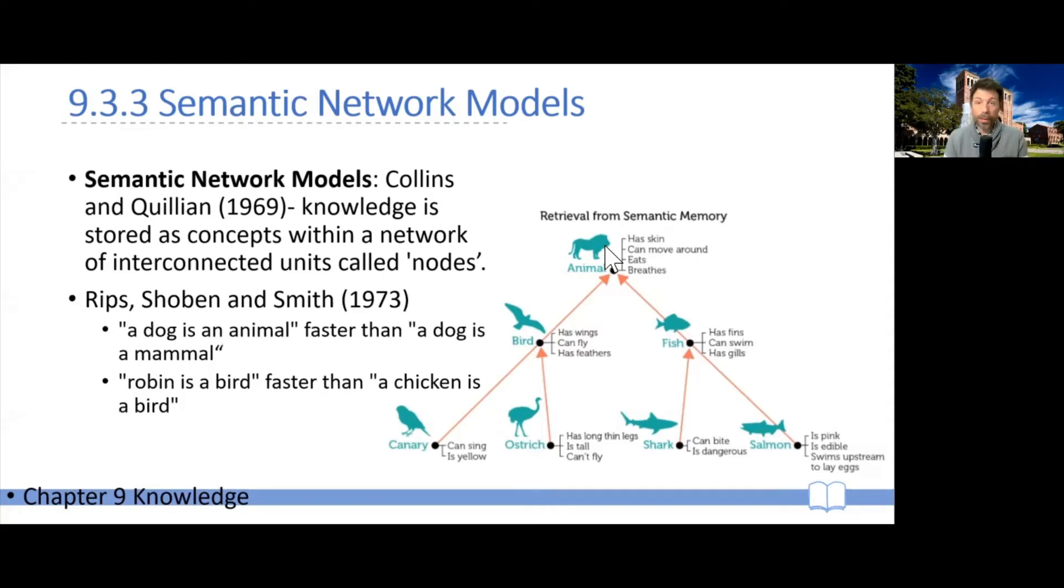Similarly, even though obviously mammal is an animal, is a superset of mammals. So according to this hierarchical network, animal is further away than mammal from dog. Similarly, participants seem to be faster at verifying robin is a bird versus a chicken is a bird. And yet that's odd because both robin and chicken should be daughter nodes of the node bird. So this model cannot quite account for these typicality effects.